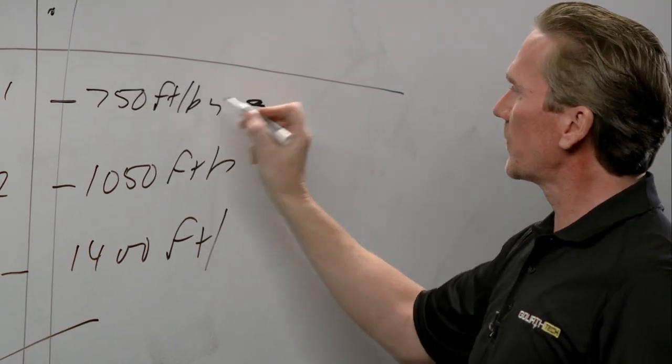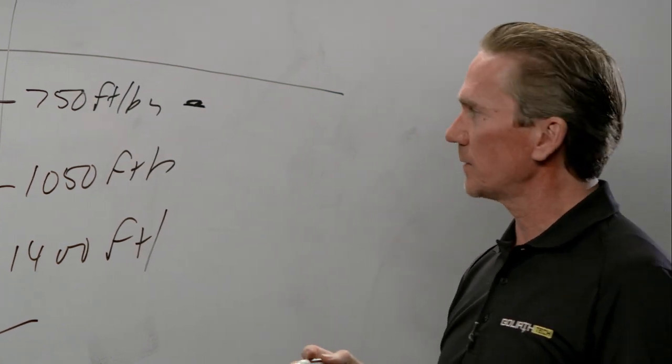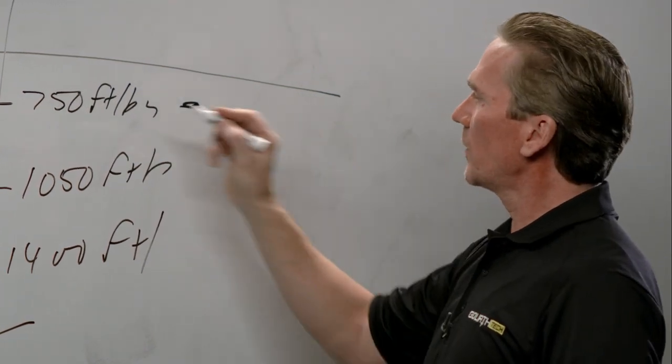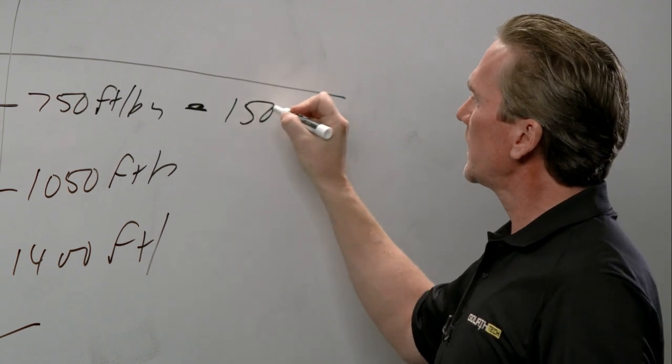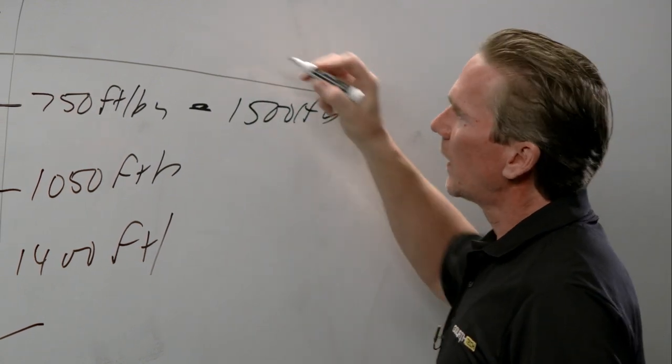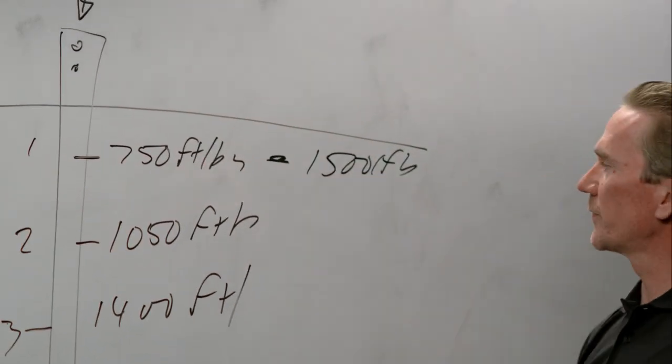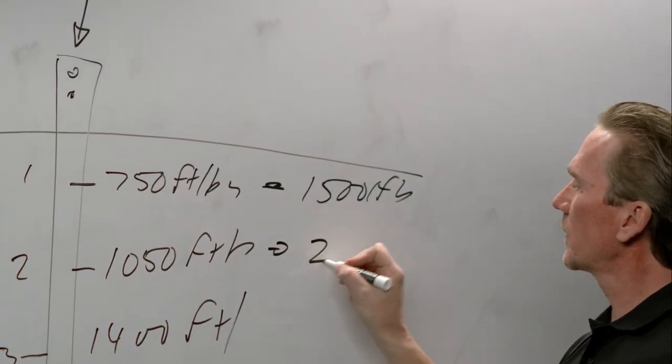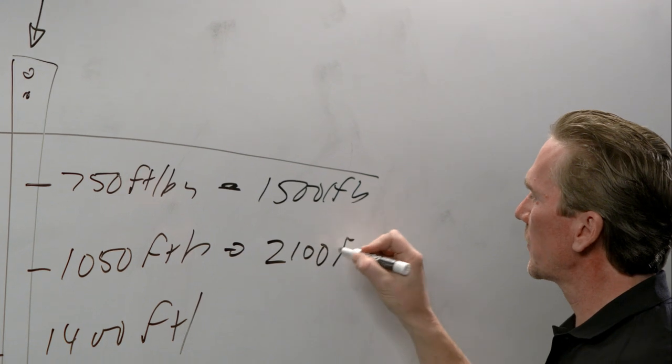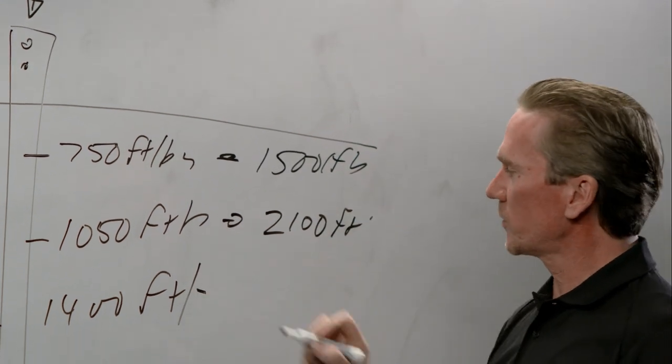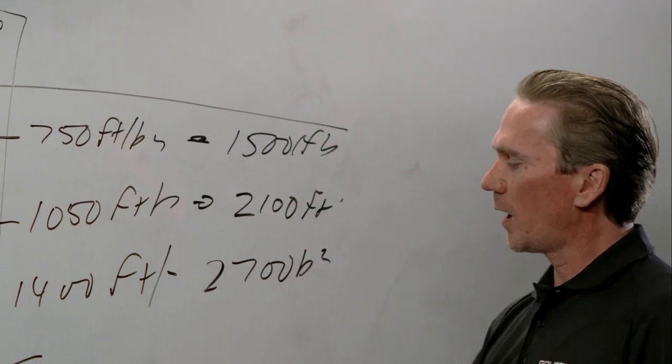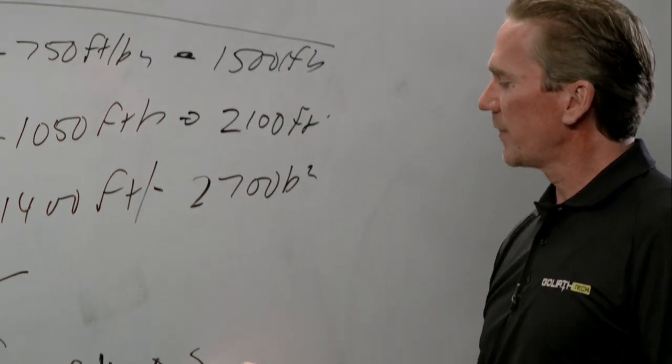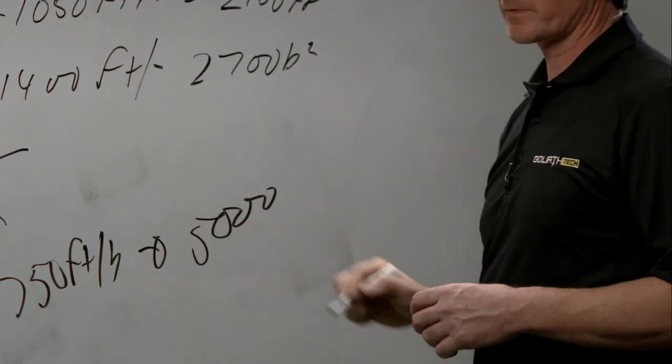We know that at 750 foot-pounds, this pile can hold 1,500 pounds of compression load. At 1,500 perhaps it could hold 2,100 pounds. At 1,400 it would be up to 2,700 pounds of compression load. All the way here when we know this will hold 5,000 pounds of compression load.